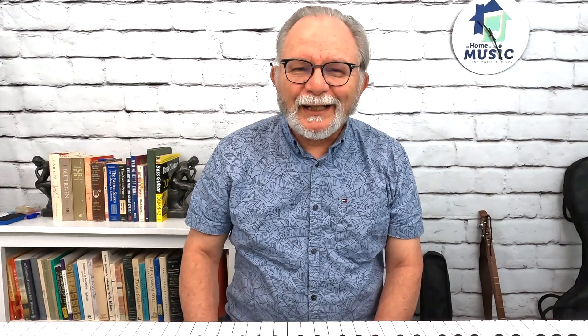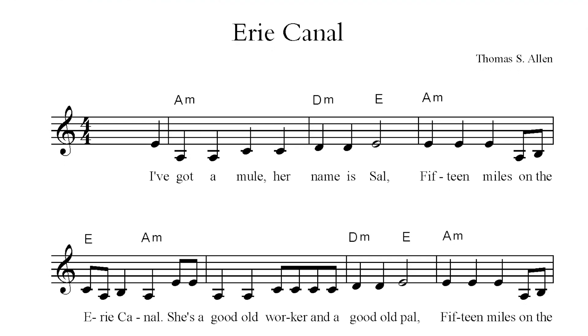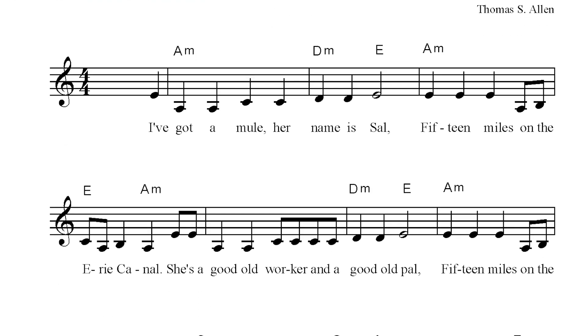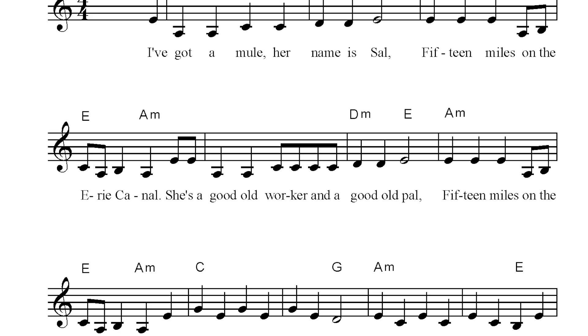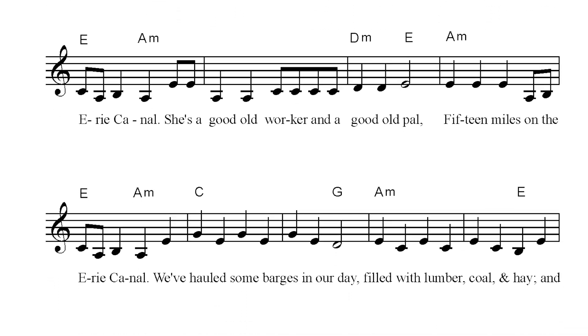What we're going to do in the rest of this video is examine a song and analyze the chord progression. This song happens to be in the key of A minor — it's an old folk tune in the public domain called Erie Canal. So let's take a look at the sheet music — actually, this is a lead sheet.